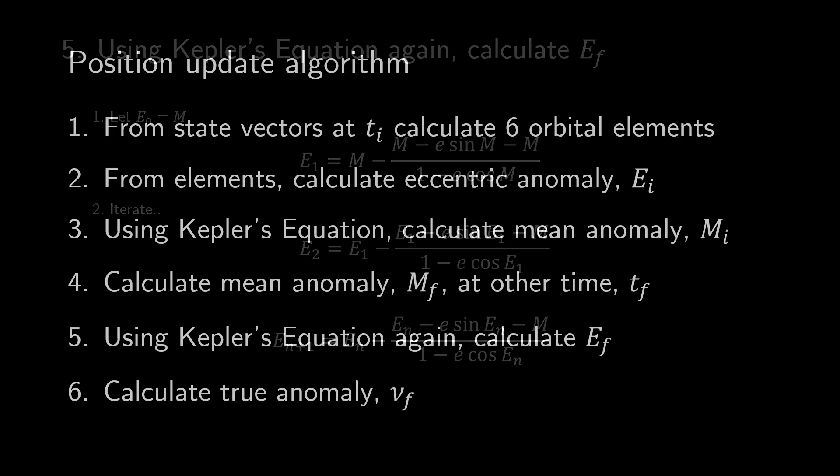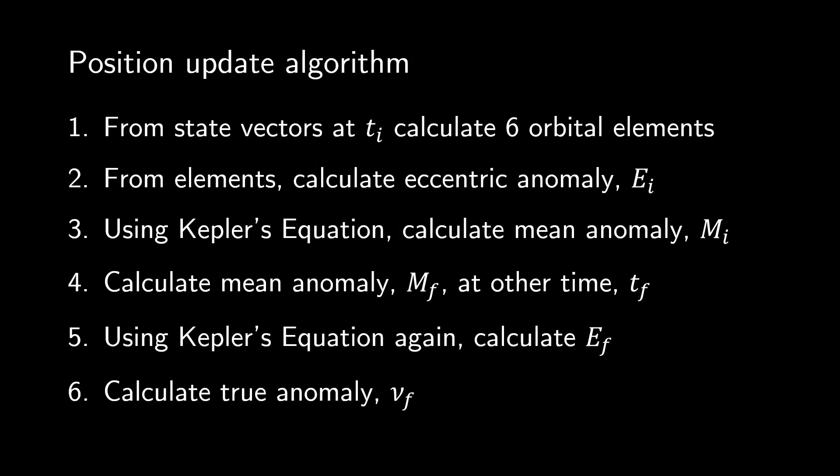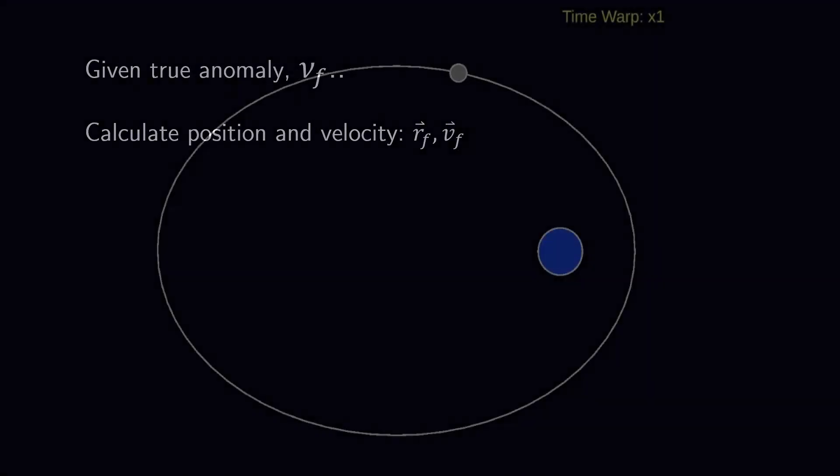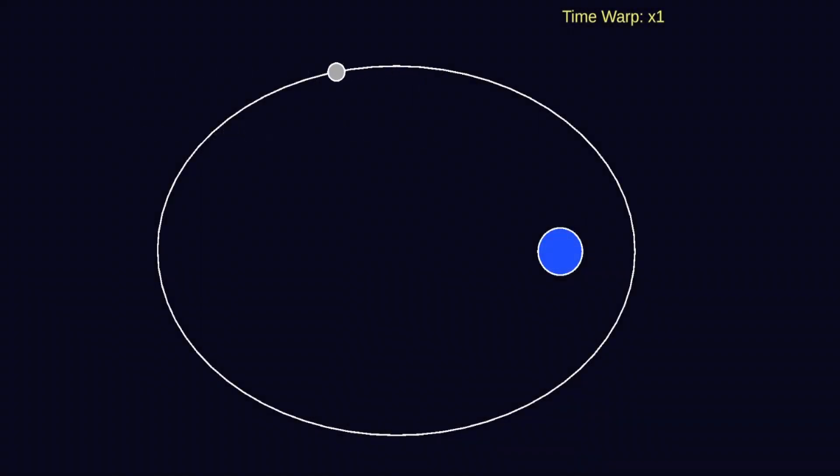Back to our algorithm at a high level. Once we have Ef, recall the relationship I alluded to earlier, which gives us the true anomaly. From there, we have all six Keplerian elements solved for. As we know, only true anomaly will update with time for a stable two-body orbit. So, from here, we can easily calculate updated state vectors. I haven't discussed that process yet, but that simple inversion of the calculations covered in parts 1 and 2 of this series will be detailed in the next video.